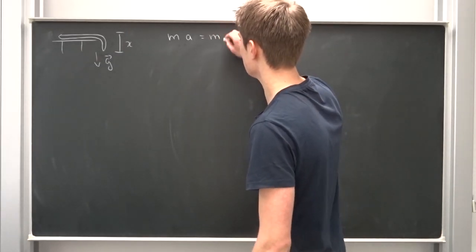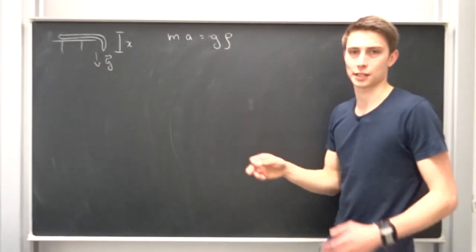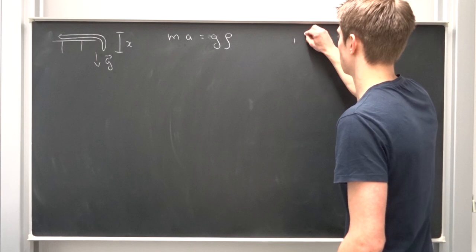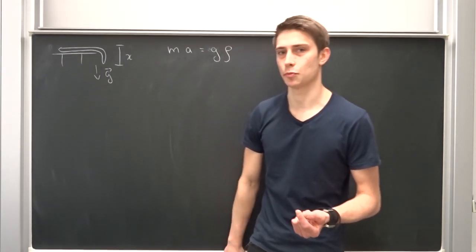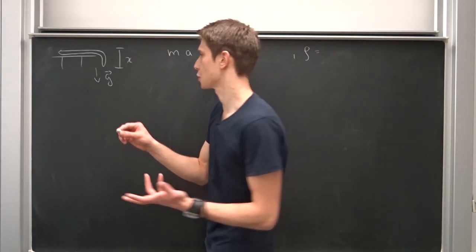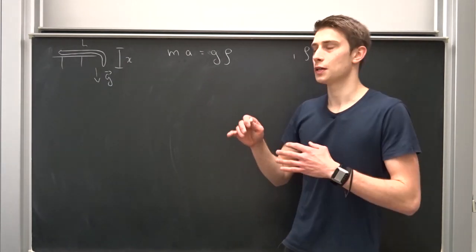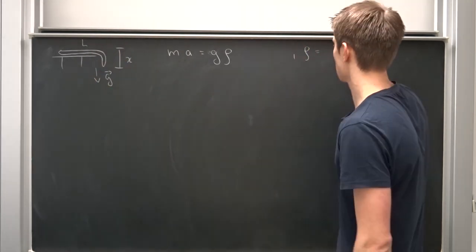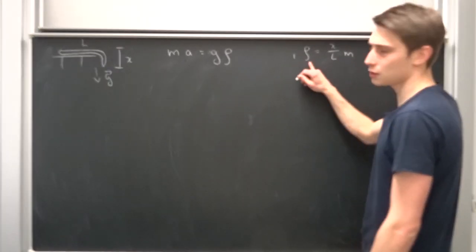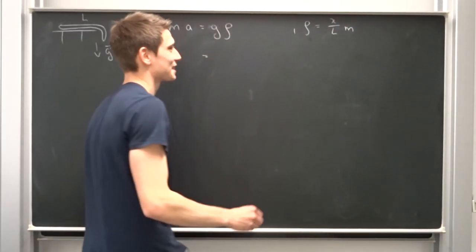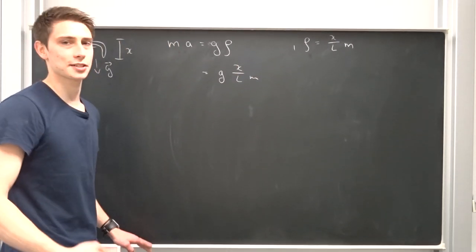We define the mass differently. We use g times some mass, which we'll call rho. Let's define rho: it's just a small portion of the rope hanging down. Let the whole length of the rope be capital L. So it's a percentage: x over L — the percentage of the rope hanging down — times the total mass m. Plugging this in: F = g times (x/L) times m.